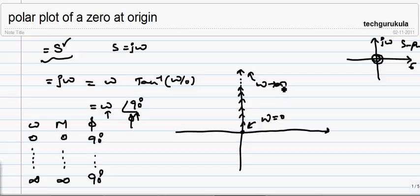This is how the polar plot looks for a zero at origin. When I say origin, it is origin of S plane. This is a complex plane, this is S plane, this is different, and this is a different complex plane.